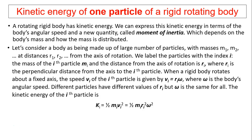The kinetic energy of one particle of a rigid rotating body. A rotating rigid body has kinetic energy, so we can express this kinetic energy in terms of the body's angular speed and a new quantity called moment of inertia. This moment of inertia depends on the body's mass and how the mass is distributed.